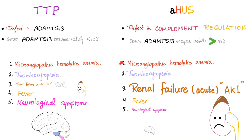The pentad in atypical HUS is the same: microangiopathic hemolytic anemia, thrombocytopenia, renal failure, fever, and neurological symptoms. However, renal failure is far more common in atypical HUS than in TTP. Also, neurological symptoms are less common in atypical HUS than in TTP. In summary: TTP — renal failure less common, neurological symptoms more common. Atypical HUS — renal failure much more common, neurological symptoms almost non-existent.